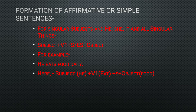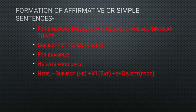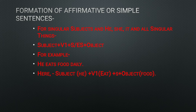For affirmative sentences, for all singular subjects — he, she, it, and all singular things — the formula is: Subject + V1 + s/es + Object. V1 is the verb's first form. For example, 'He eats food daily.' Validating the formula: subject is 'he,' V1 is 'eat' with 's' added, and the object is 'food.' So the sentence is: 'He eats food daily.'